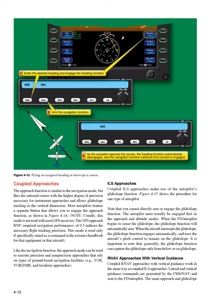Coupled Approaches. The approach function is similar to the navigation mode, but flies the selected course with a higher degree of precision necessary for instrument approaches and allows glide slope tracking in the vertical dimension. Most autopilots feature a separate button that allows you to engage the approach function. This mode is generally not used with most GPS receivers — the GPS approach RNP of 0.3 induces the necessary flight tracking precision and is only used if specifically stated in the avionics handbook. The approach mode can be used to execute precision and non-precision approaches that rely on ground-based navigation facilities, for example VOR, VOR-DME, and localizer approaches.